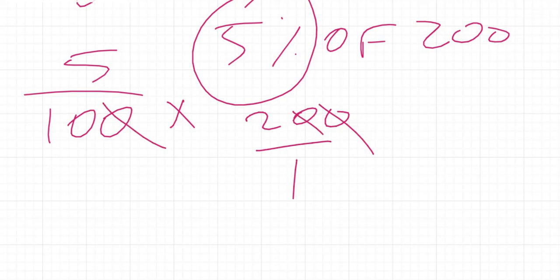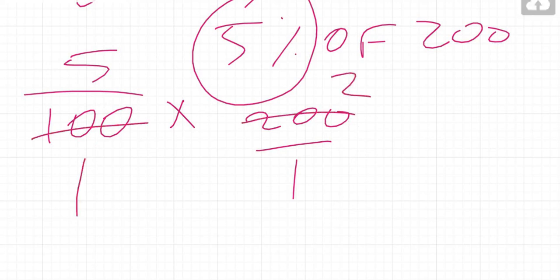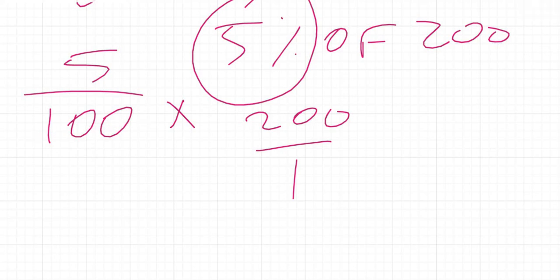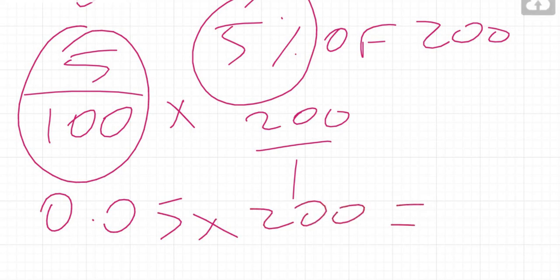You can cancel the zeros, or simplify the fraction. A hundred into two hundred goes two times, so we get five times two divided by one, which gives us ten. So you would be using ten dollars out of your two hundred dollars. Five percent of two hundred is ten.